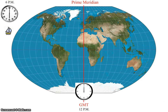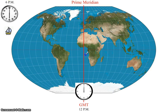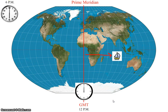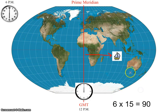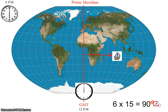Let's do a few more examples. On the ship it's 6pm, and in Greenwich, England it's noon. Since 6pm is ahead of noon, the ship has to be to the east. From noon to 6pm is a six-hour difference, so we're six time zones apart. Every time zone is 15 degrees, so 6 times 15 is 90 degrees. Since we're ahead, we're to the east, making the longitude of the ship 90 degrees east.